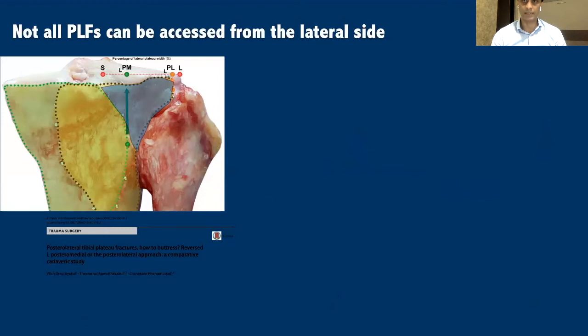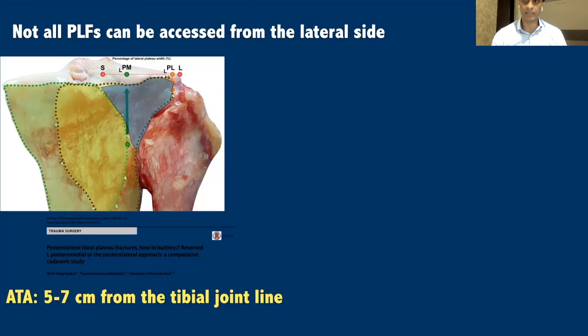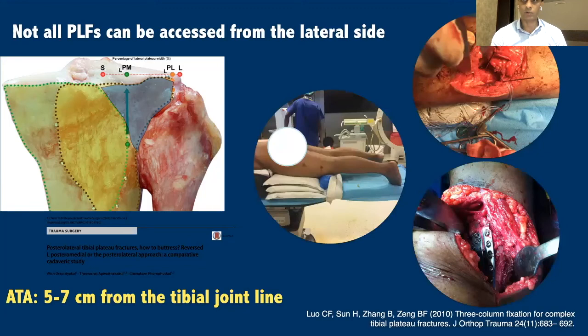It is important to remember that not all posterolateral fragments can be accessed from the lateral side. In certain fracture patterns, when the apex is running low or too medial, you need a different approach. Whatever is accessible through the posterolateral side is limited to a specific zone, because anything lower is difficult — the anterior tibial artery crosses your field and you cannot make the approach more extensive. In these patterns, and also when you have the entire posterior column broken with both posteromedial and posterolateral fragments, the approach of choice is the reverse L approach as described in the landmark 2010 paper.